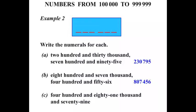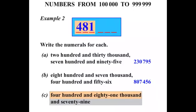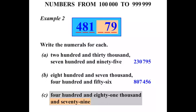Our final question: 481,079. Again, the first three digits represent 481,000, so we have 481. Then we have 79. For our last three digits we need to write 79, but we mustn't have any gaps — we need to fill the gaps with zeros. If we put a zero at the end that would make it 790, not 79. So what we need to do is move the 79 to the end and put the zero at the front. So that number is 481,079.